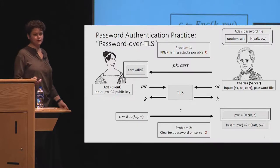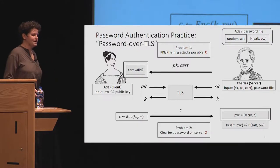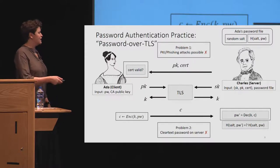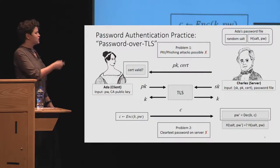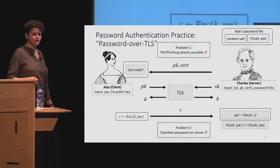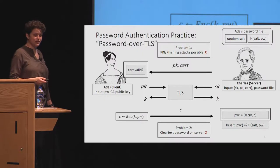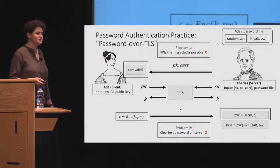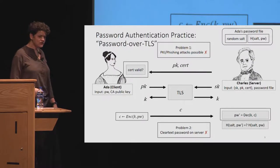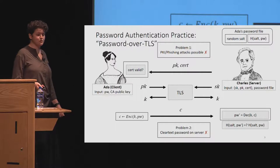The other problem, which is a little bit more subtle, is that at least for some number of milliseconds, Charles holds the password of Ada in the clear. So if Charles' server is corrupted at any point while he's checking that password, the adversary who corrupts the server learns what that password is. So we'd like to be able to do better with crypto.